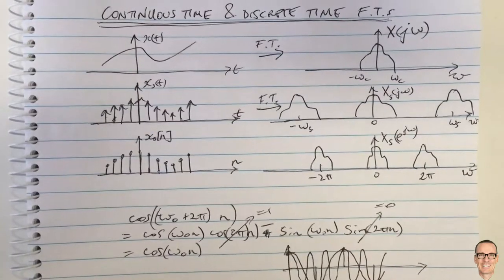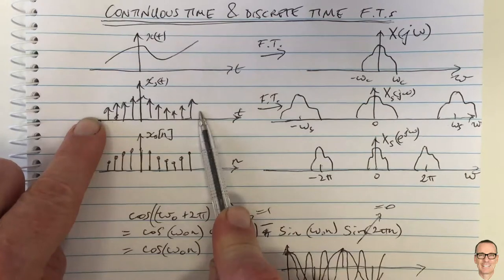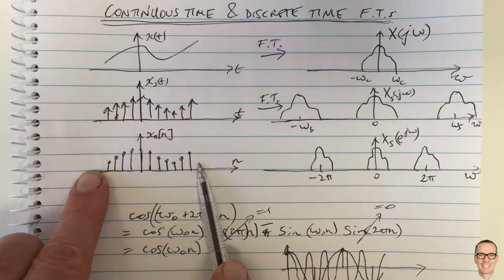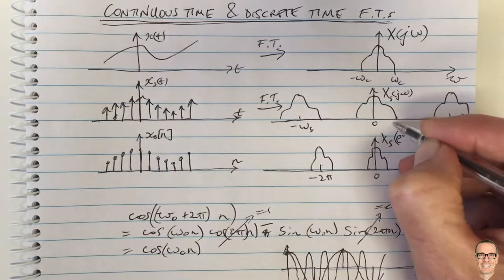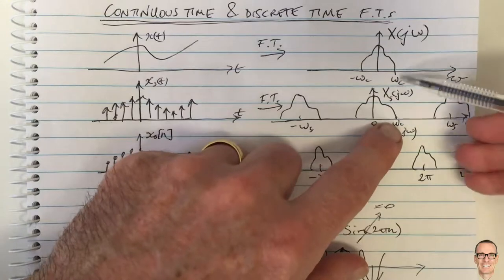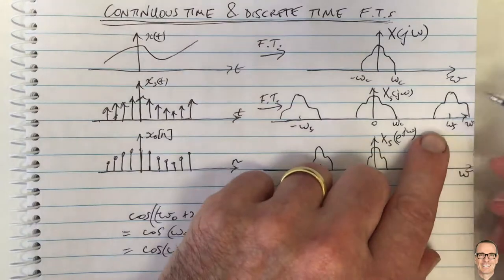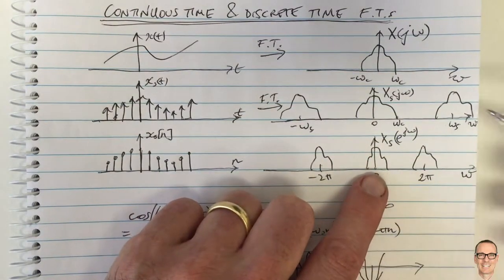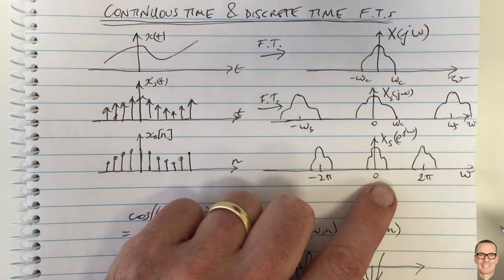The question students often ask is: we have the Fourier transform of a continuous time sampled waveform and the Fourier transform of a discrete time waveform — how do these two relate to each other? The answer is straightforward. In the continuous time sampled Fourier transform, the bandwidth is omega_c and the replicas repeat at omega_s. The question is how omega_s relates to 2π and how omega_c relates to the corresponding value in the discrete time transform. It's a simple scaling.